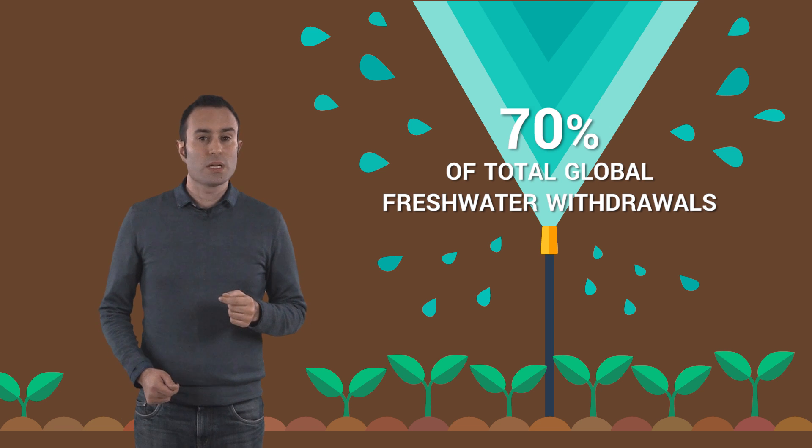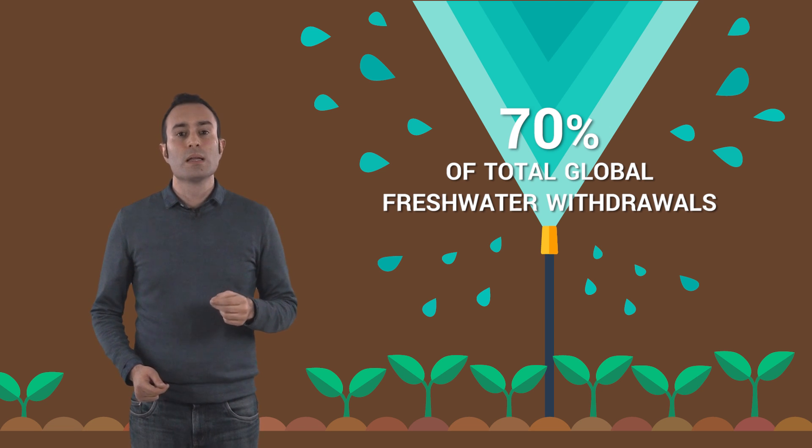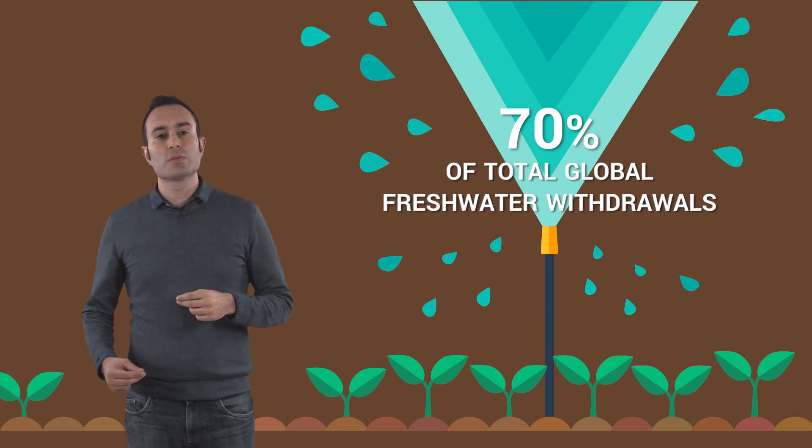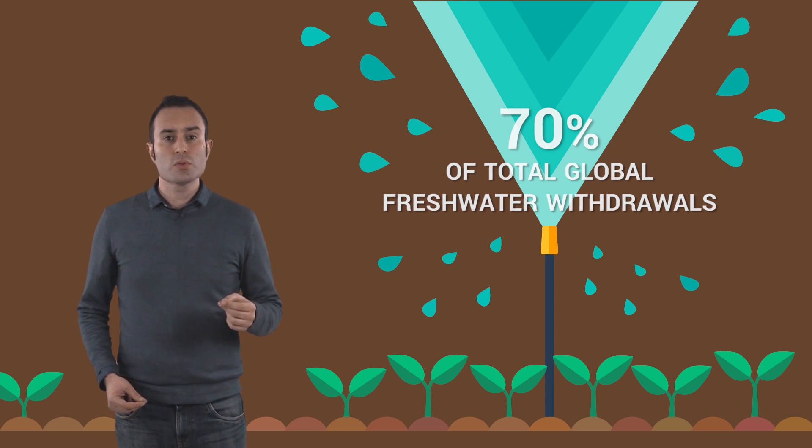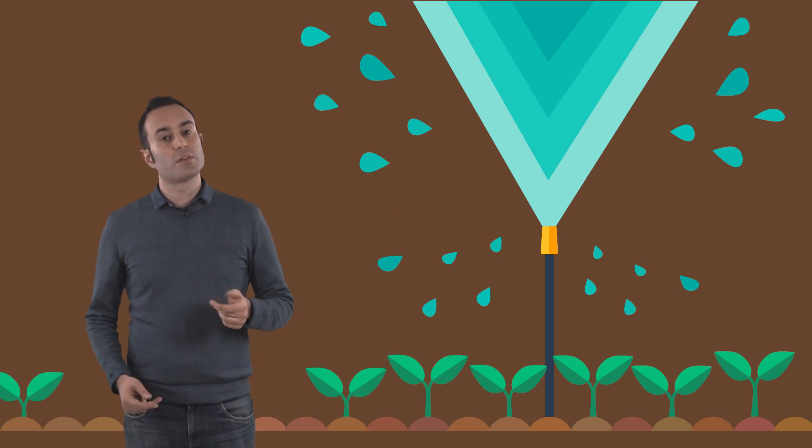Water is used for agriculture production, forestry and fishery, along the entire agri-food supply chain, and it is used to produce or transport energy in different forms.